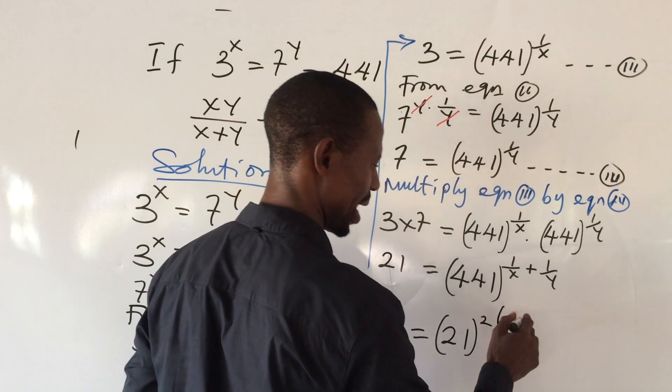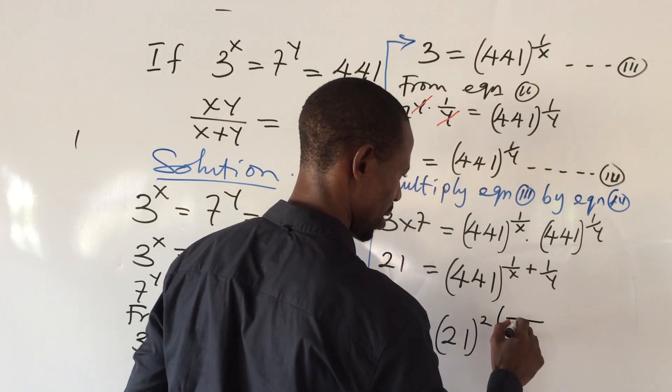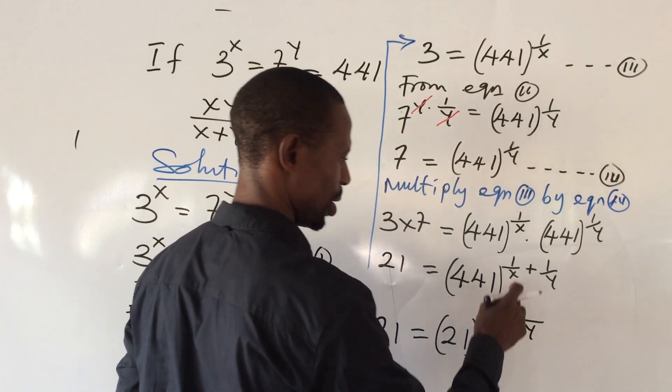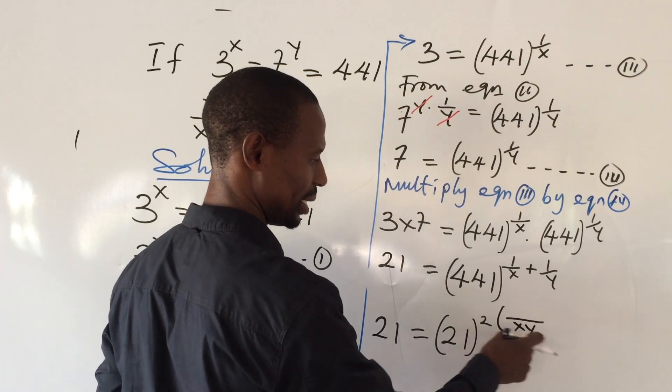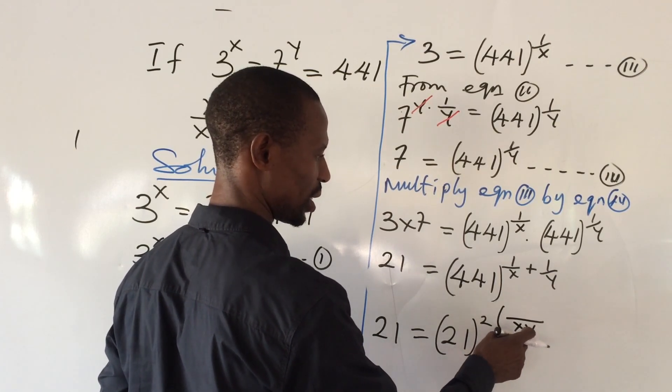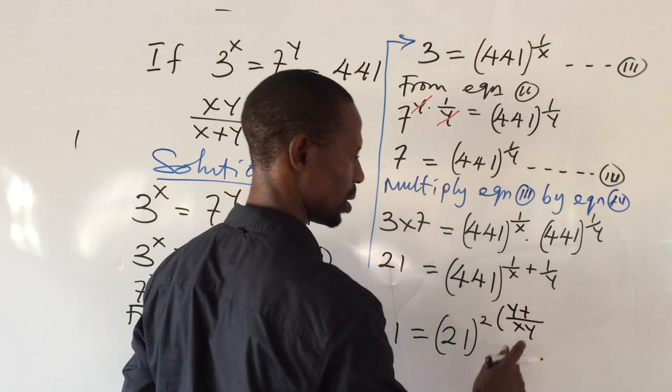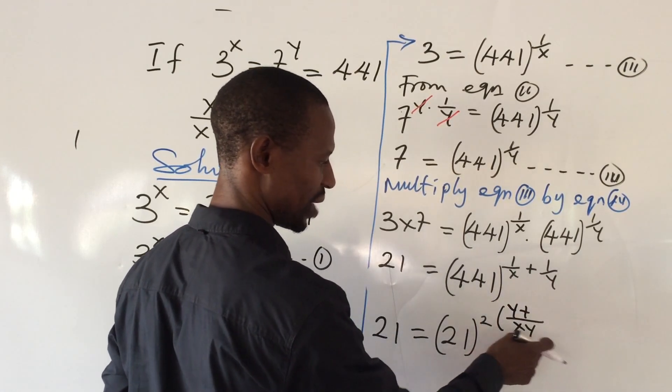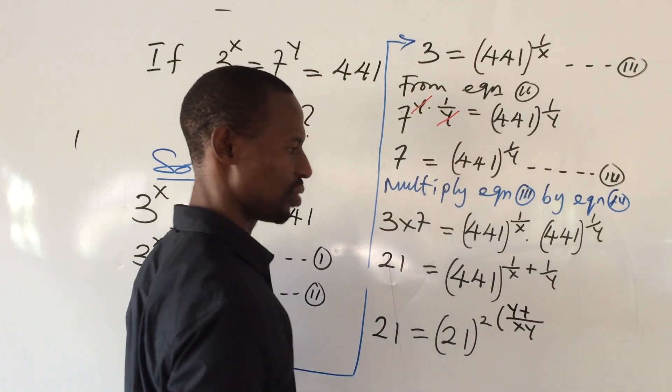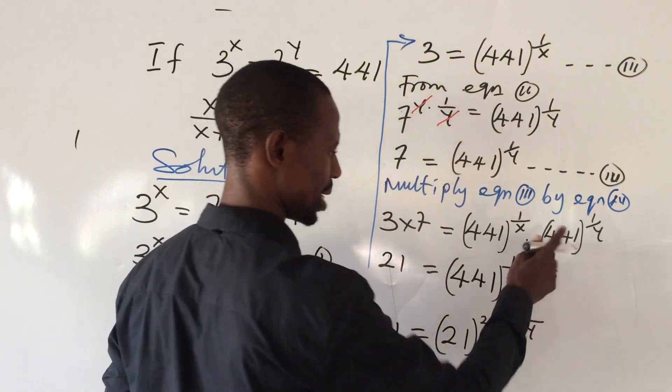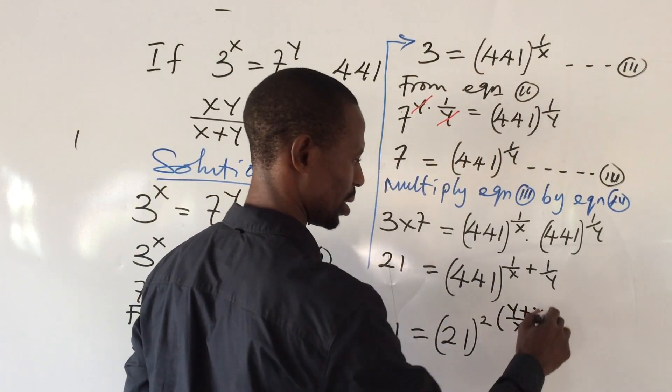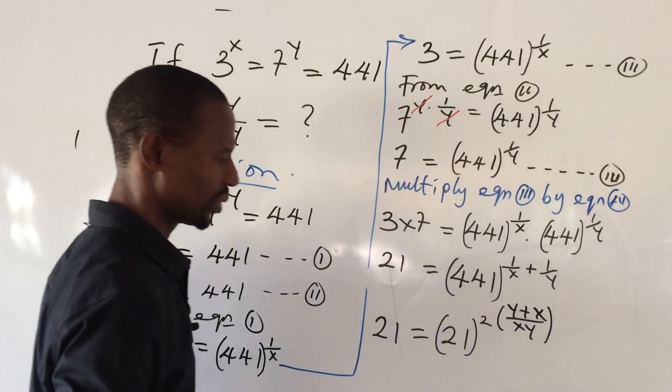If we go ahead to simplify this, the LCM of x and y is going to give us here xy. Use x to divide the LCM, this will now give us y will be left. y times 1 will give us y plus, use your y to divide this LCM, that will give us x. x times 1 will give us here x, close bracket.